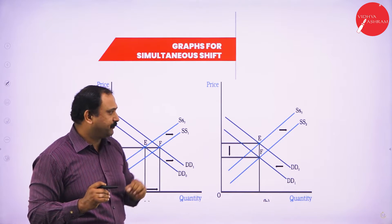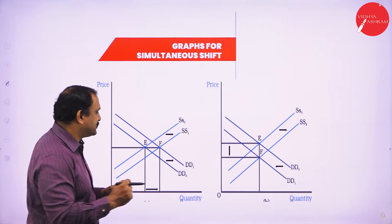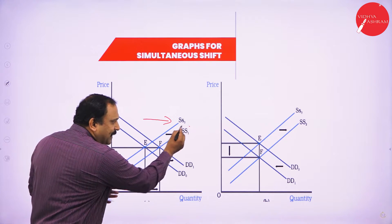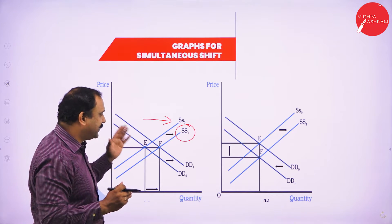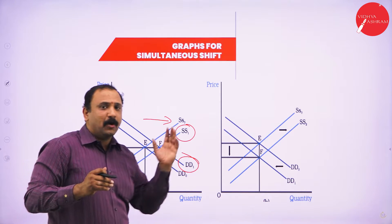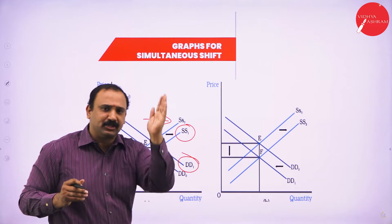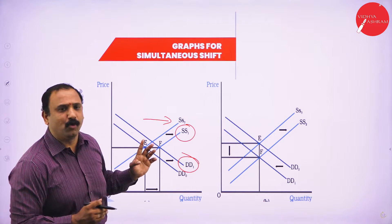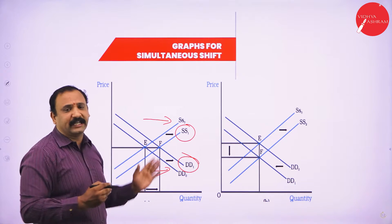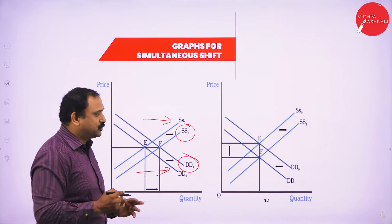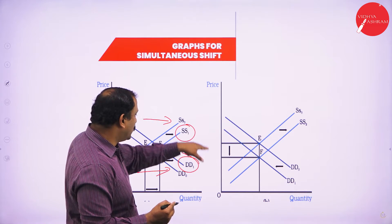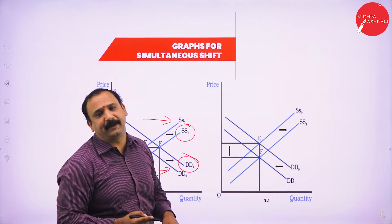Looking at the graphs for simultaneous shifts: when the shift is happening, you can see the supply factor moving rightwards and the demand factor also moving up — both curves moving rightwards with the price increasing. Again, when it comes down, you would see a constriction happening altogether.